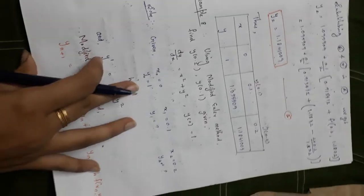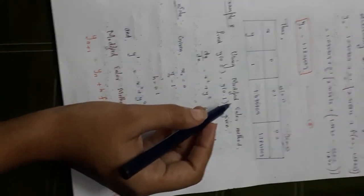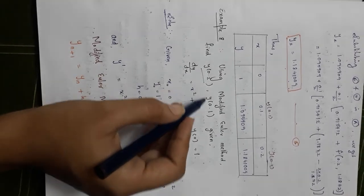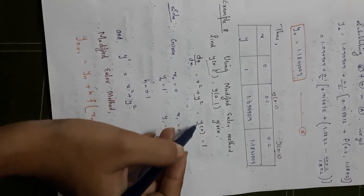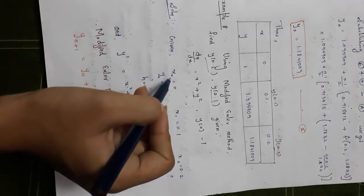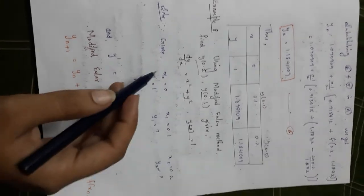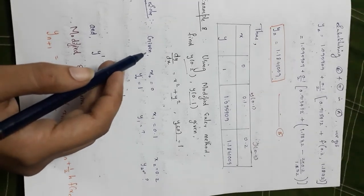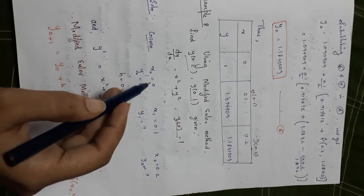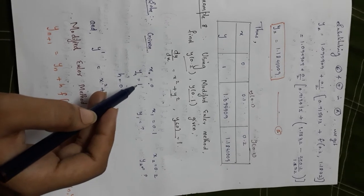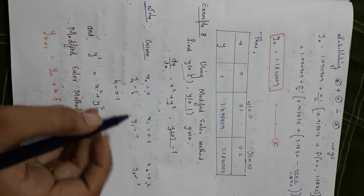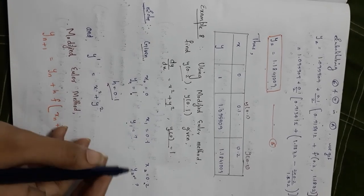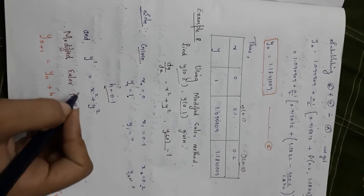Next, Example 8: using the modified Euler method, find y(0.1) and y(0.2), given dy/dx = x² + y² and y(0) = 1. So x₀ = 0, x₁ = 0.1, x₂ = 0.2, h = 0.1. We need to find y₁ and y₂.